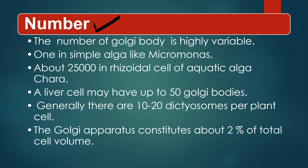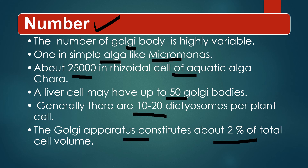The number of Golgi bodies per cell is highly variable. In animal cells it is just one, whereas in plant cells there may be 10 to 20 dictyosomes per cell. In the alga Micromonas it is just one, but in another alga Chara there are 25,000 Golgi bodies in its rhizoidal cells. In the liver cell of vertebrates there may be 50 Golgi bodies. Golgi apparatus constitutes about 2% of total cell volume.